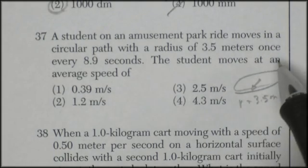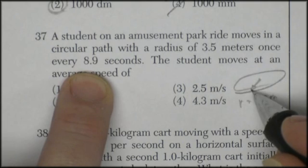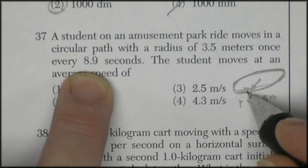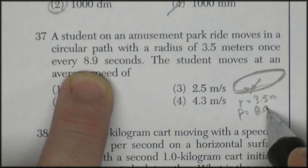Moves in a circular path where the radius is once every 8.9 seconds. So it goes around once every 8.9 seconds. The period of oscillation would be 8.9 seconds.